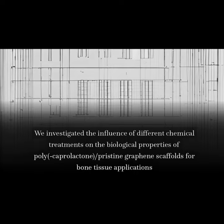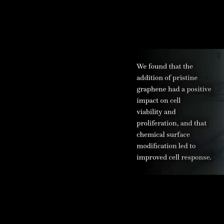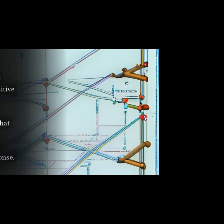We investigated the influence of different chemical treatments on the biological properties of polycaprolactone/pristine graphene scaffolds for bone tissue applications. We found that the addition of pristine graphene had a positive impact on cell viability and proliferation, and that chemical surface modification led to improved cell response.